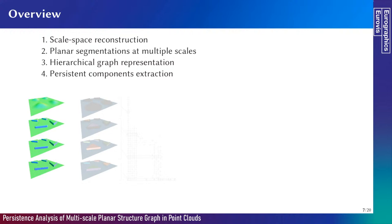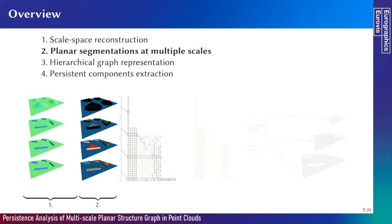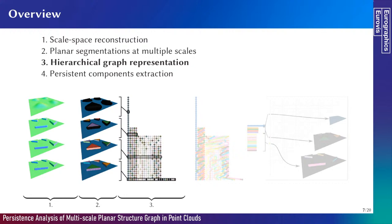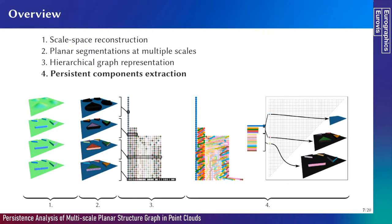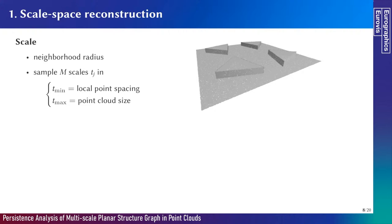We developed a new method composed of four main steps. First, we construct the point cloud using a scale-space approach so that the shape is smoother and smoother. In the second step, we perform segmentations to group points with similar differential properties at each scale. We construct in the third step a graph to organize all of these segmentations and link similar regions together. Finally, we extract the meaningful planar regions that hold at several scales as individual components in the graph. The scale is the radius of the Euclidean neighborhood used to compute differential properties. We define a scale interval going from the local point spacing to the whole point cloud size, and sample m=50 scales between.